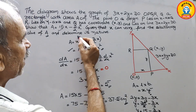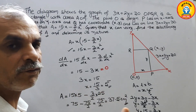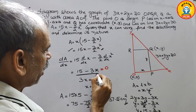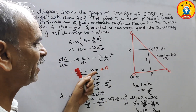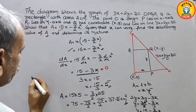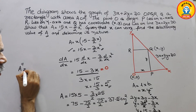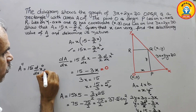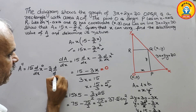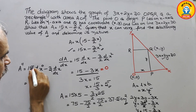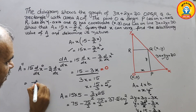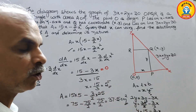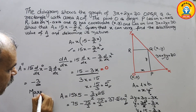To determine the nature of the stationary point, we go for the second differentiation. After the first differentiation we got dA/dx = 15 − 3x. Differentiating again: d²A/dx² = 0 − 3 = −3. Since −3 is negative, the stationary point is a maximum. Therefore the nature of the stationary value is a maximum.